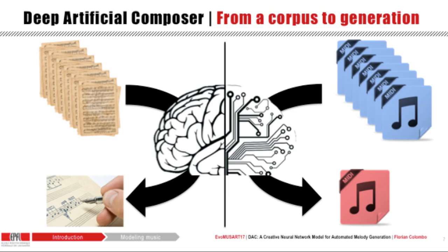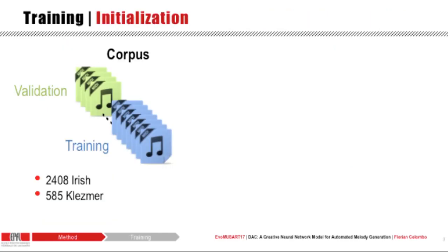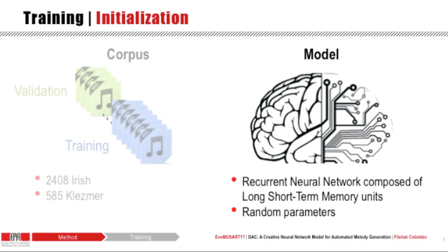It is a learning algorithm that aims at modeling the complex tasks that music composition is. To train the Deep Artificial Composer, we constituted a heterogeneous music corpus composed of Irish and Klezmer melodies, which we split into a large training corpus and a smaller validation set. We then built a multi-layer recurrent neural network composed of long short-term memory units, selected for their recent success in sequence learning tasks such as speech synthesis or translation, like Google Translate.